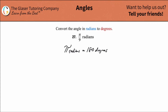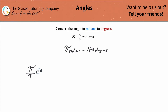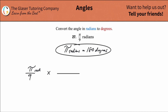When we set up this conversion, I start with my given value of π/9 radians. I'm going to write it down: π/9. The radians are written next to the fraction, but I'm just going to move them into the numerator because it's saying the same thing. Then we're going to multiply by our known relationship.